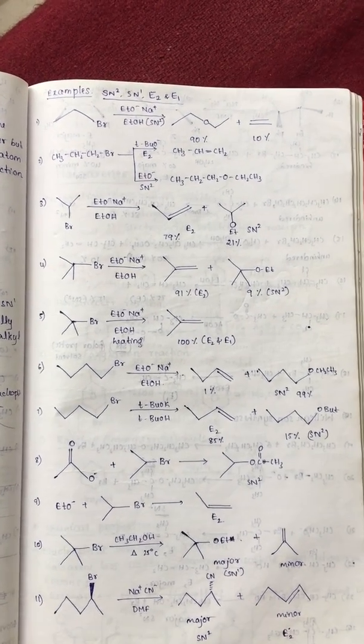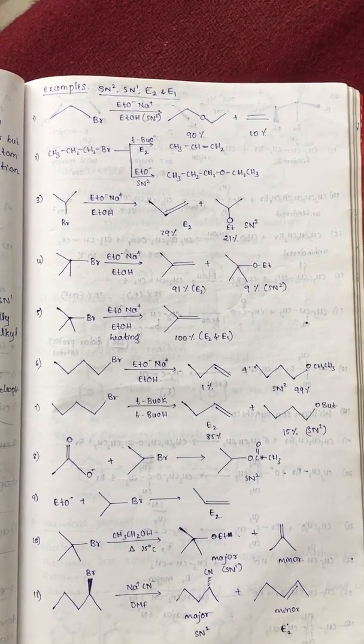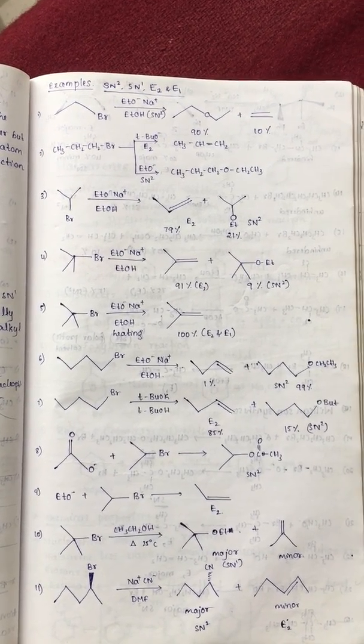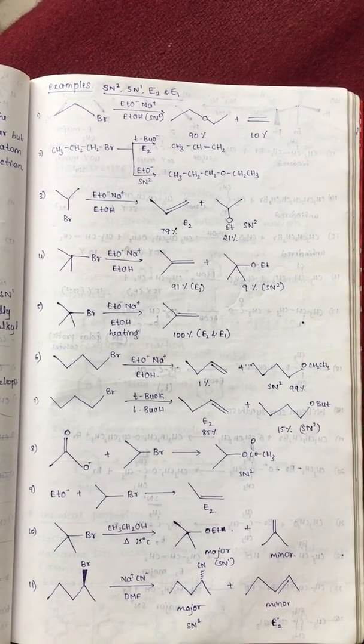Next, tertiary butyl bromide reacts with ethoxide in ethyl alcohol. So, always the tertiary compound leads to elimination. That is what is the major product.